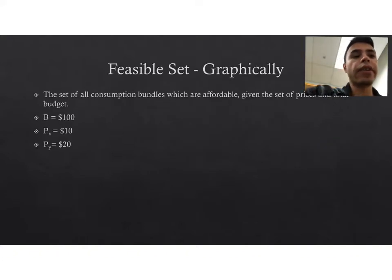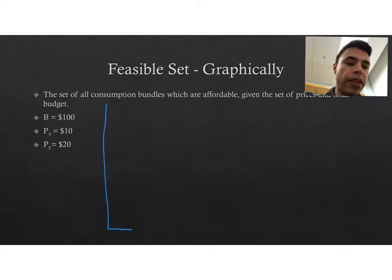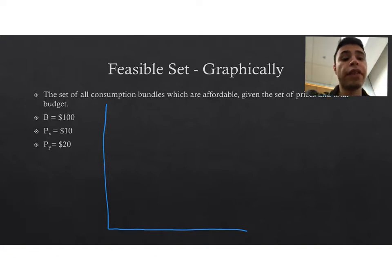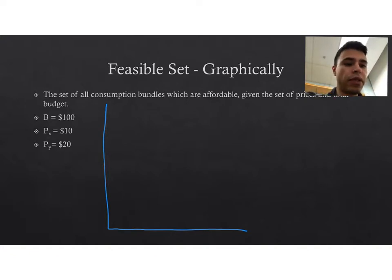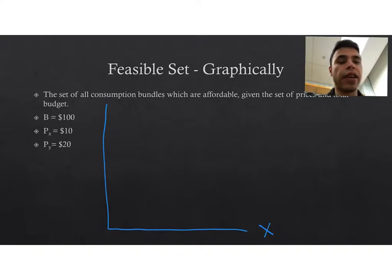The basic idea of the graphical representation of a feasible set is to use a two-dimensional Cartesian plane to represent the set of all points that are affordable given a set of prices and a particular budget. By convention, the first good is listed on the horizontal axis and the second good is listed on the vertical axis.